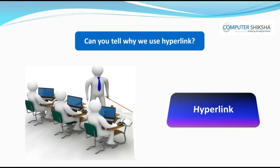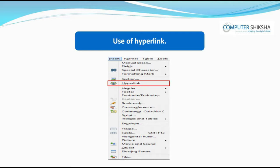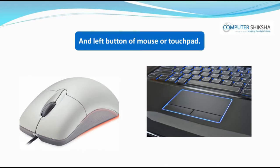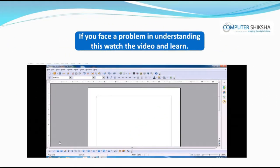Can you tell why we use hyperlink? By using hyperlink, within one page, by the use of a link, you can bring addresses of many files using which you can open these anytime. To open a file using this link, you need to keep the control button pressed and then press the left button on the mouse or touchpad for a few seconds. If you face a problem in understanding this, watch the video and learn.